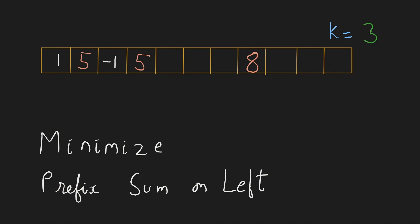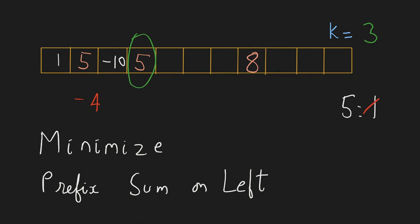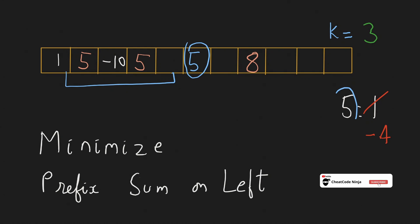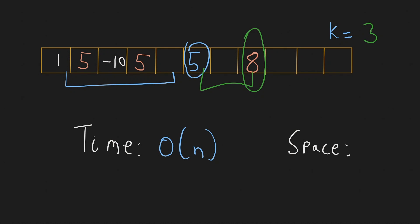When we encounter a scenario with negative numbers: the first time we encounter 5, we store a prefix sum of 1. When we encounter 5 again, if the prefix sum is now minus 4, subtracting minus 4 from the prefix sum at 8 leads to a larger result. So we always minimize the prefix sum for a value — if the current prefix sum is less than what's already stored, we update it. The time complexity of this solution is O(n) since we only pass through the array once, and space complexity is O(n) for the hashmap.